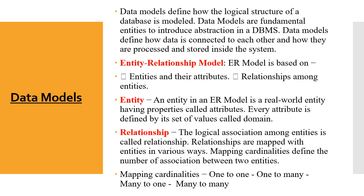Next is the data model. Simply, a data model shows what data is stored, how it is processed, and what relationships exist between different connected entities. The model is called the Entity-Relationship (ER) model. An entity has particular real-world properties — it has a name, attributes, and those attributes can define some values which we call the domain. All these entities have an association — a logical, structural, proper synchronized way — which is called a relationship. Relationships are mapped with entities in various ways.